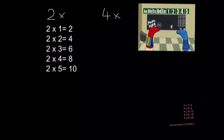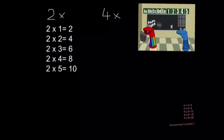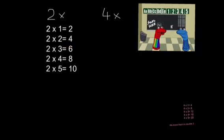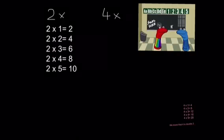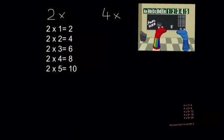So let's take a look at the two times tables. We can see that 2 times 1 equals 2, 2 times 2 equals 4, 2 times 3 equals 6, 2 times 4 equals 8, and 2 times 5 equals 10.